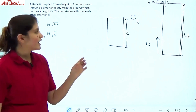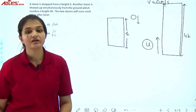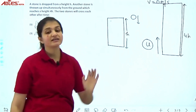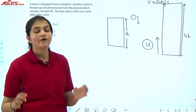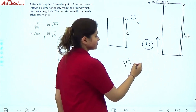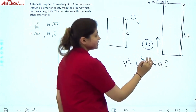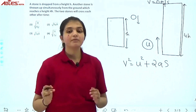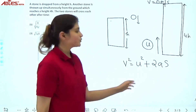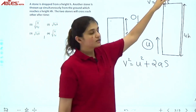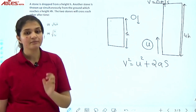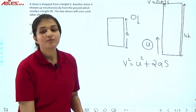Now we can calculate the initial velocity of the second stone. We use the kinematic equation v² = u² + 2as. When the stone reaches maximum height, its final velocity is 0 meters per second.